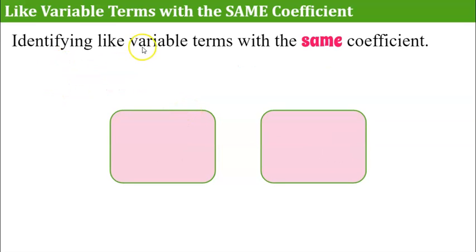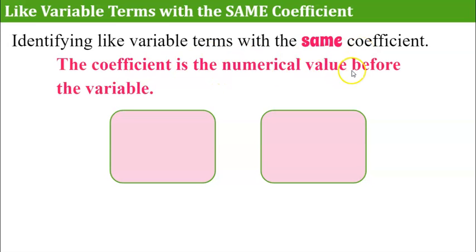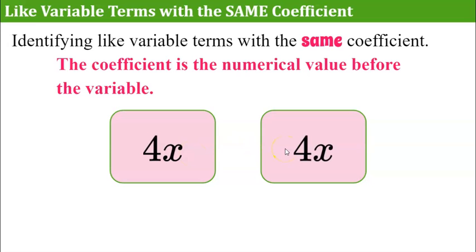Now let's identify like variable terms with the same coefficient. Pause the video and write two like variable terms that have the same coefficient. Welcome back! So the coefficient is the numerical value before the variable. So 4 is our coefficient, x is our variable, and 4x is a variable term. A like variable term with the same coefficient should also be 4x — same variable, same exponent, and same coefficient.